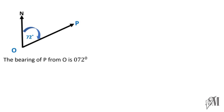You must understand: the bearing of P from O means you stand at O facing north, then turn clockwise until you face the direction of P. In this case, you turn 72 degrees, so the bearing is 072.